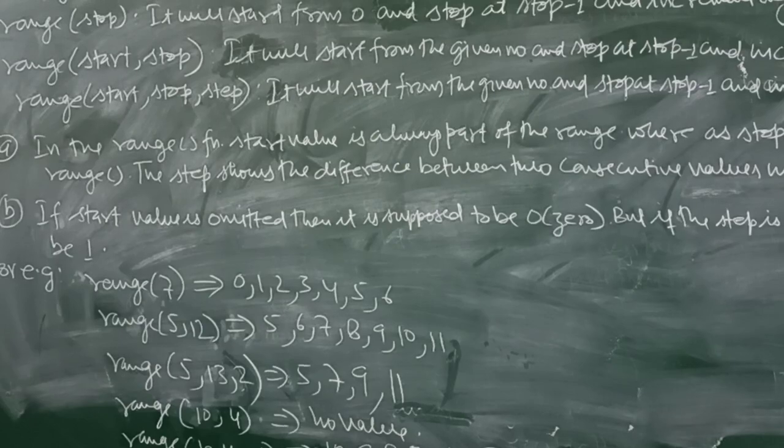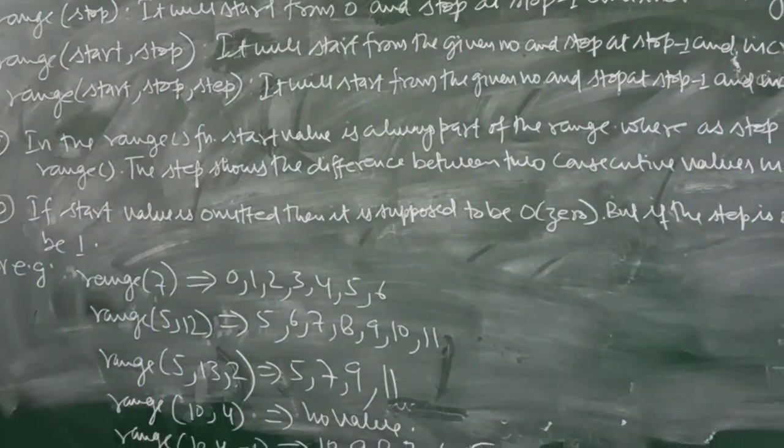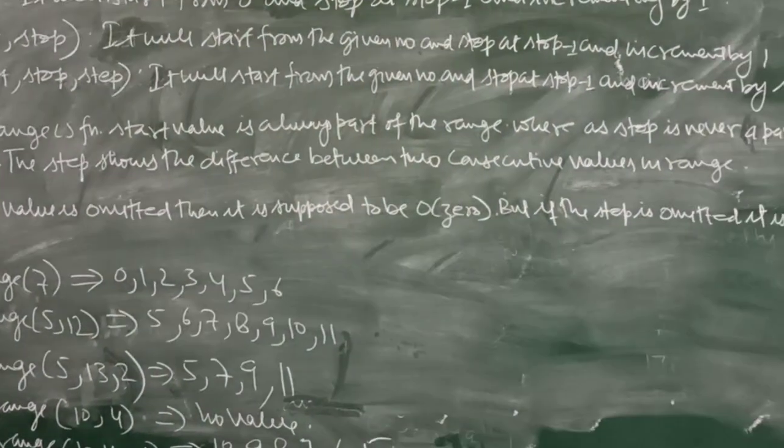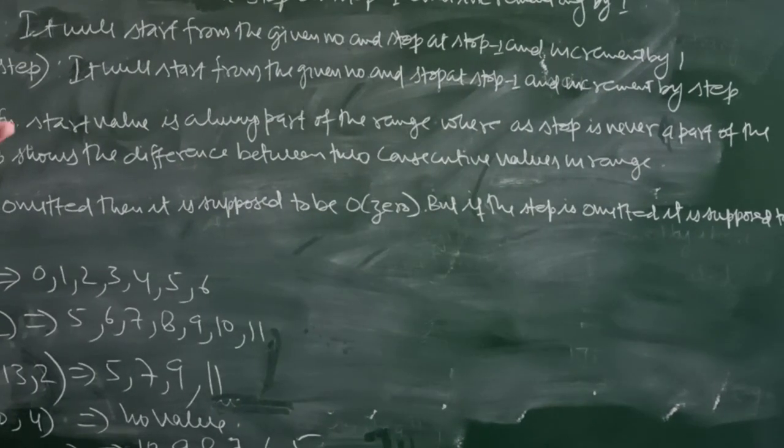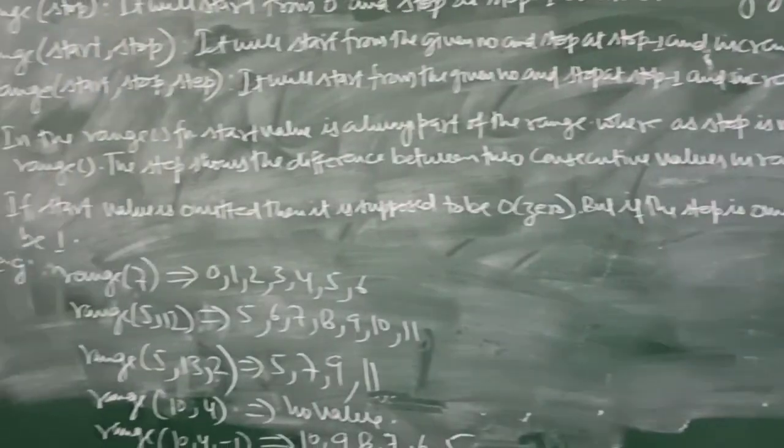If the start value is omitted, then it is supposed to be 0. But if the step is omitted in the function, it is supposed to be 1.